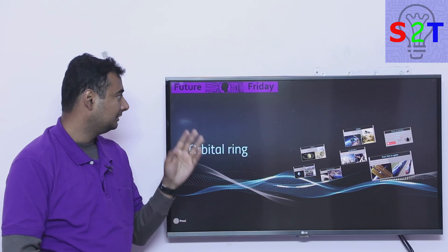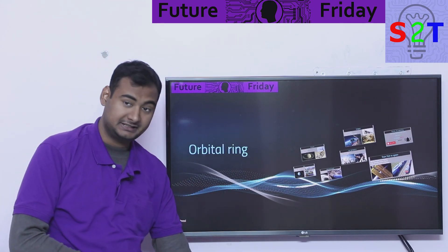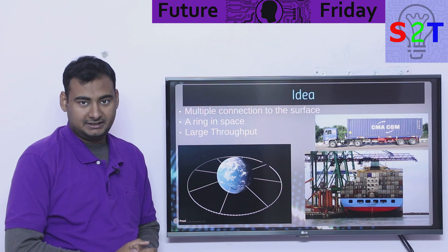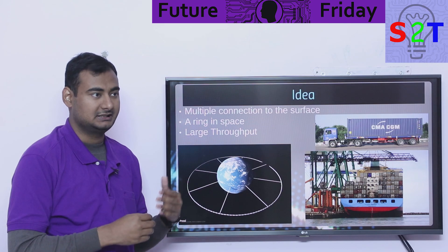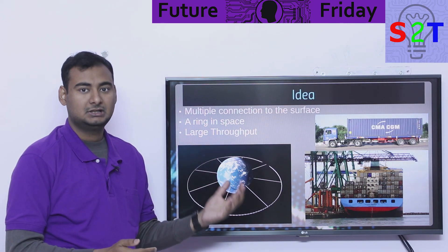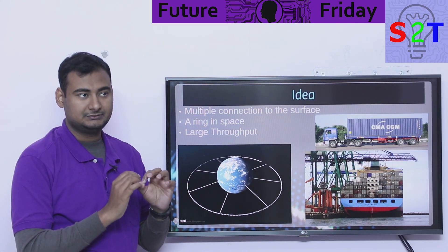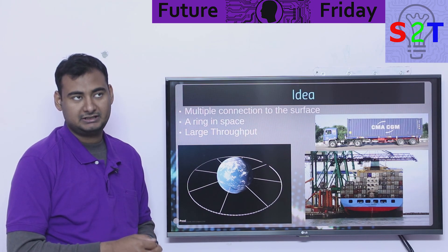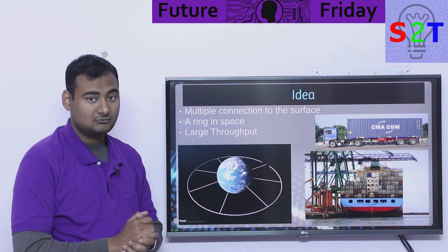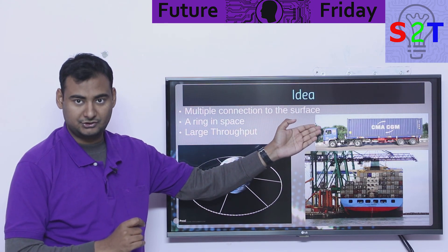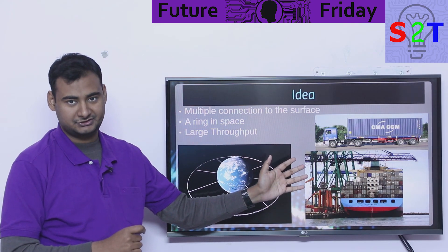Welcome to Future Friday. In today's episode we're going to take a look at the orbital ring — the biggest architecture in space. The idea is to connect multiple points on a planet: America, Europe, India, China, Africa. The reason we call it a ring is because it is a ring in space. Rather than a space elevator, which is like a cargo truck carrying one container, the orbital ring is equivalent of a giant container ship.